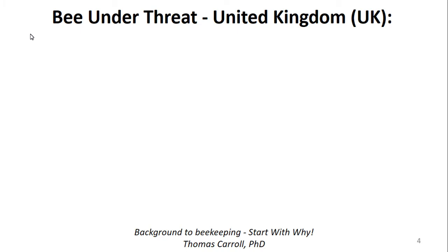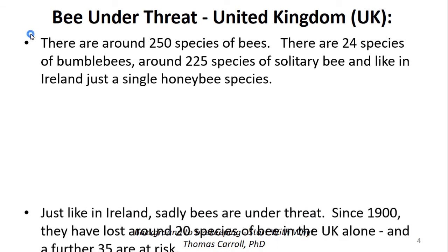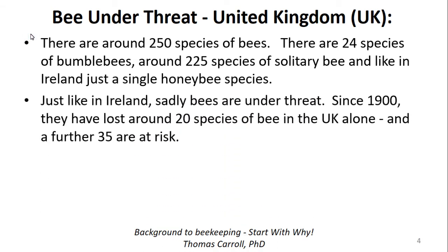The same situation exists in the UK — bees are under threat. In the United Kingdom there are about 250 bee species: 24 species of bumblebee, 225 species of solitary bee, and just a single honeybee species, as in Ireland. Sadly, since 1900 the UK has lost around 20 species of bee, and a further 35 are at risk.